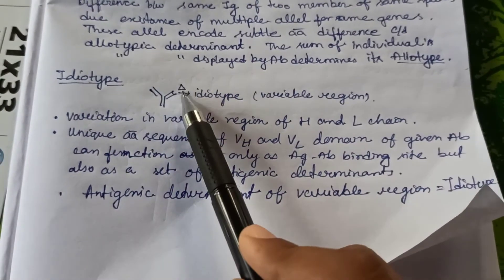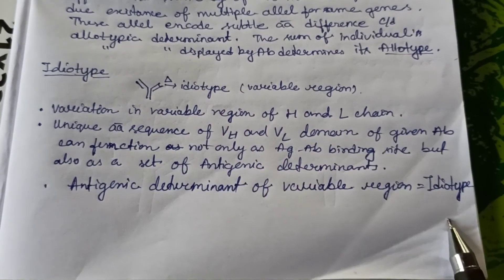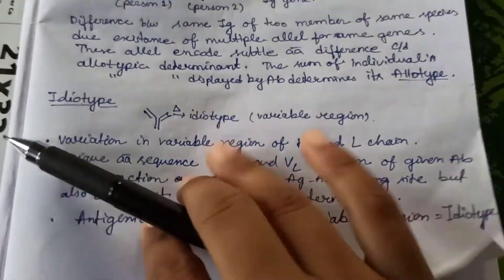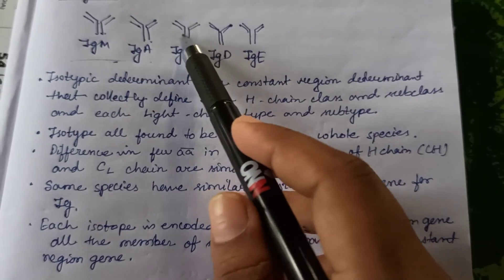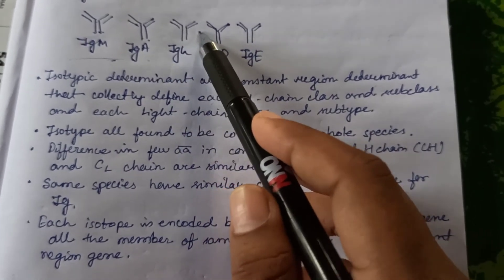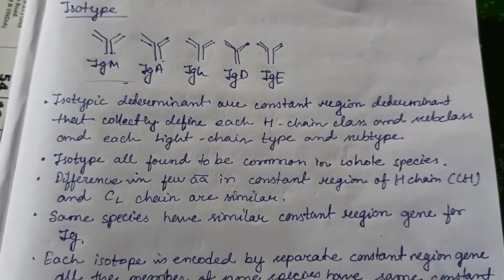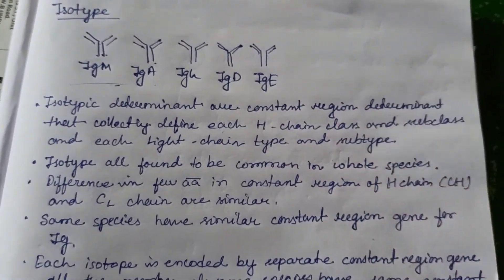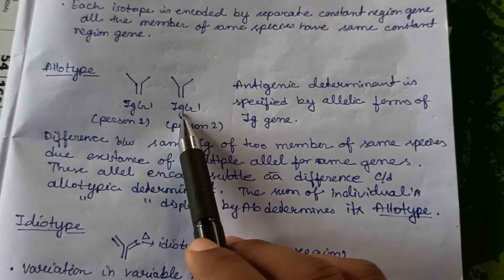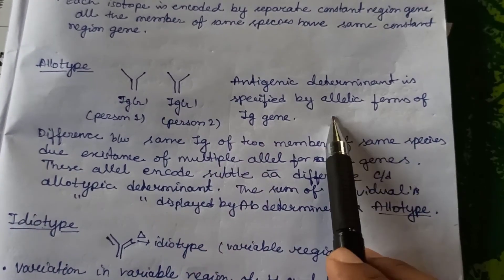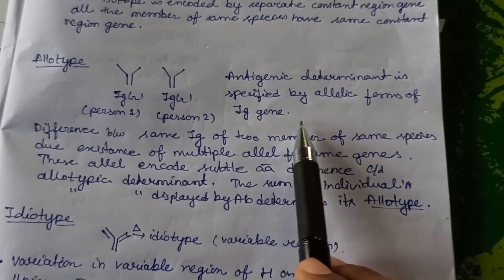To summarize: the variable region acts as an antigenic determinant known as the idiotype. The constant region acts as an antigenic determinant known as the isotypic determinant. In allotype, the same immunoglobulin differs between members of the same species due to the allelic forms of the immunoglobulin gene.